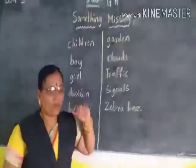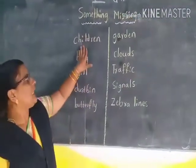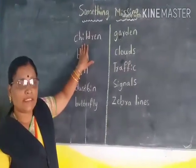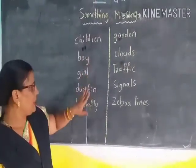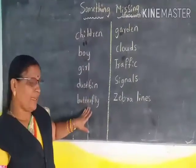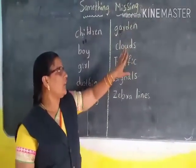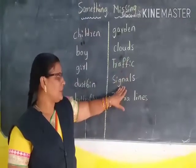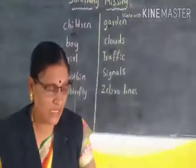Today I am going to give the song words for learning. Children, in that picture we can see the children: boy, girl, dustbin, butterfly, garden, clouds, traffic signals, zebra lines. Zebra lines means these are the black and white lines called zebra lines.